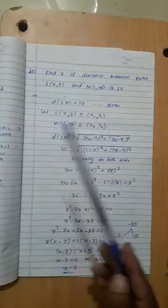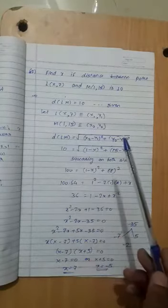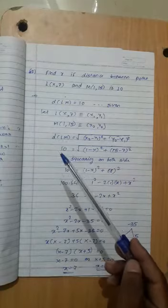Assume x1, y1 and x2, y2. Distance between LM using formula: x2 minus x1 squared plus y2 minus y1 squared. LM is 10. x2 is...